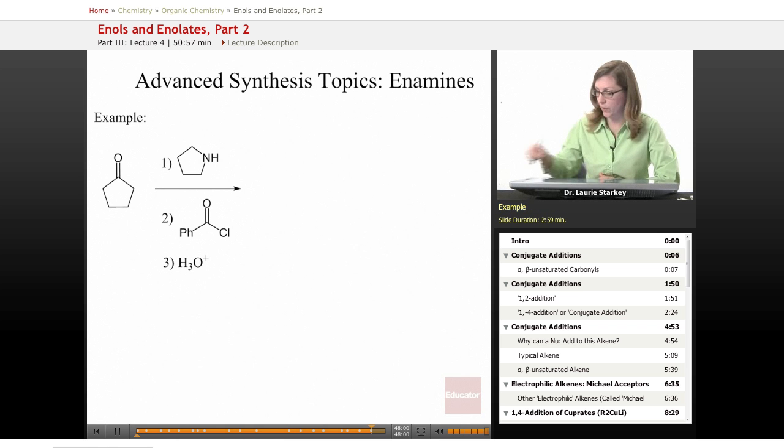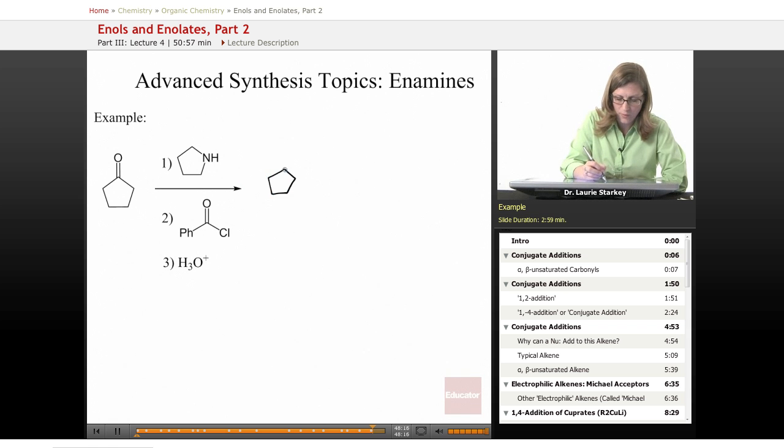Let's do one more example here. We can take cyclopentanone and react it with this secondary amine. After step one, we're going to convert it to an enamine.